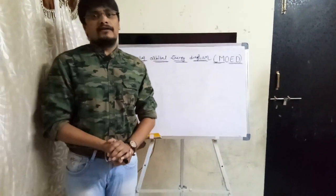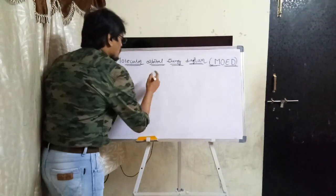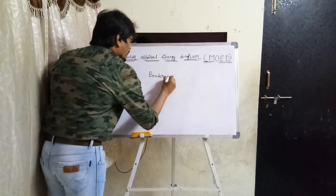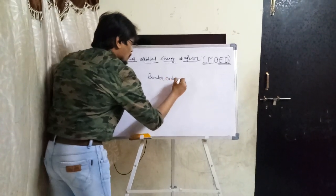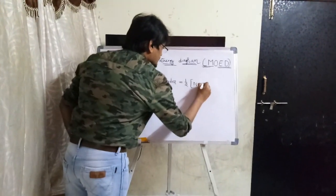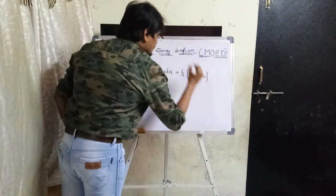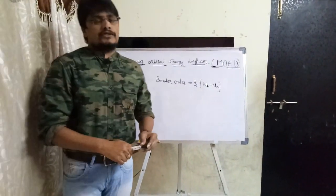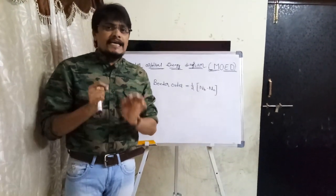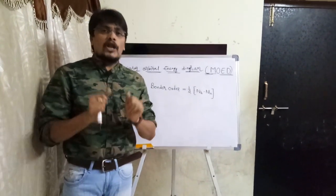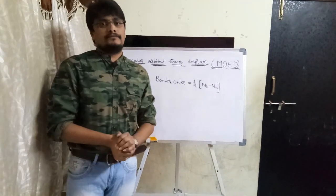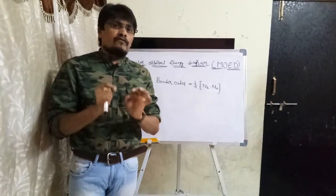Bond Order can be mathematically expressed as: Bond Order = ½(NB − NA), where NB is the number of electrons located in bonding molecular orbitals of a molecule, and NA is the number of electrons located in anti-bonding molecular orbitals of a molecule.